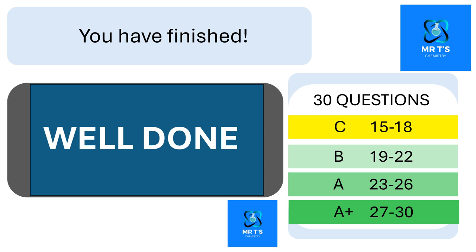That's the end of this set of questions — this is the B set. Remember, you're looking to get 27 to 30 right if you're aiming for an A+, or 23 to 26 to show you're really on top of things. Hope this has been helpful — look out for my other videos with questions on important topics in chemistry. See you later.